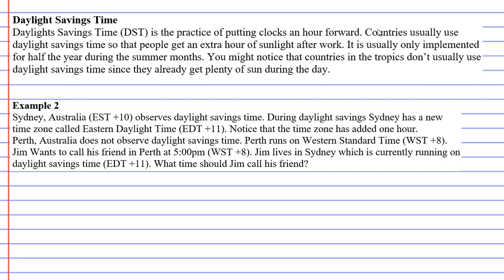Countries in the tropics don't usually use daylight savings time. The reason is that they get plenty of sun during the day anyway, so they don't really need it. Remember that countries in the tropics are the ones that are close to the equator.